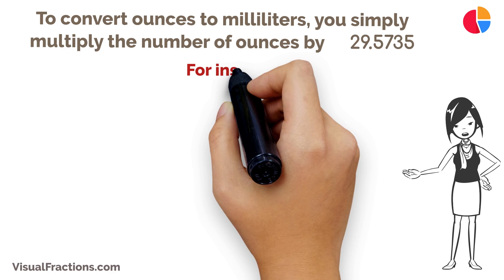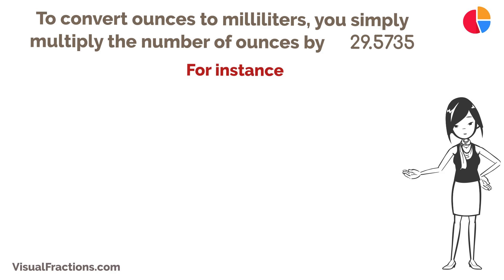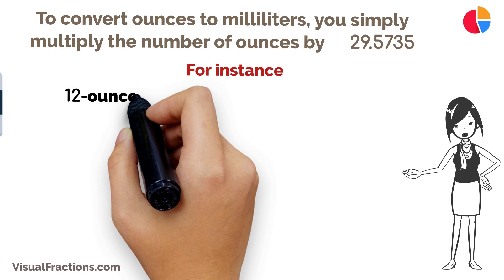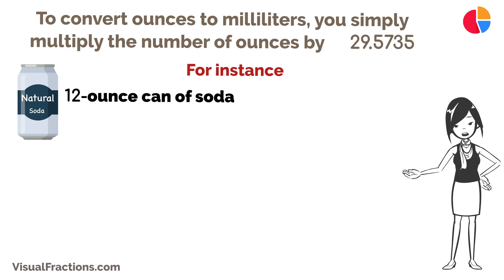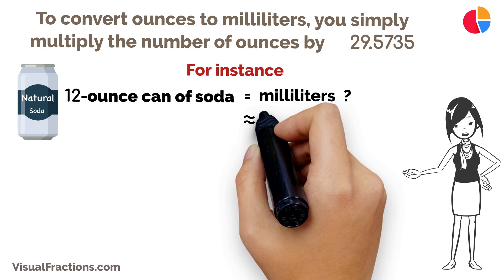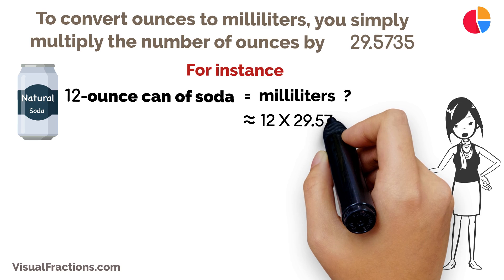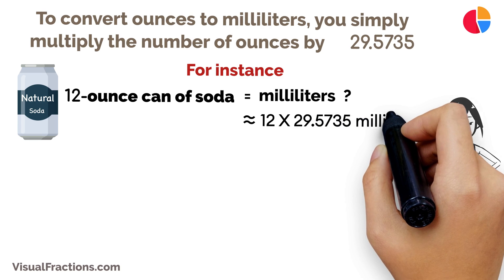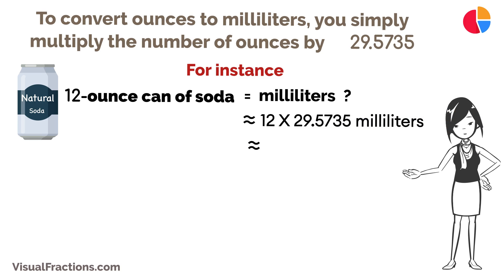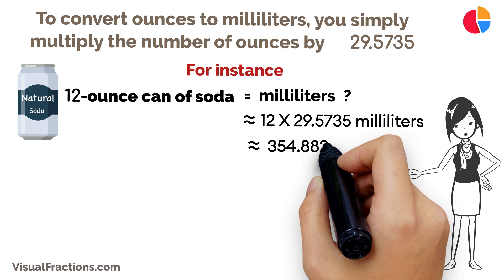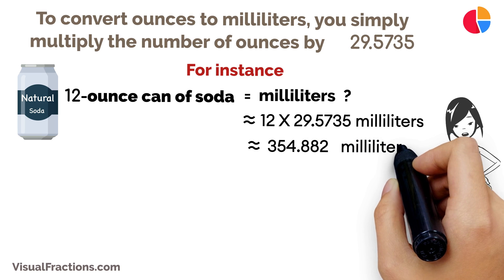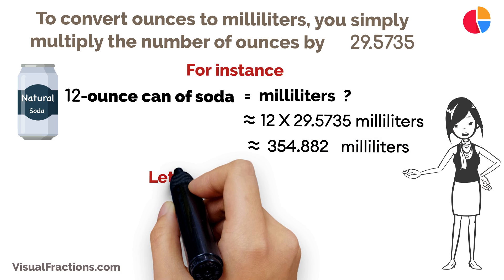For instance, if you have a 12-ounce can of soda, to find out how many milliliters that is, you multiply 12 ounces by 29.5735 to get roughly 354.882 milliliters.